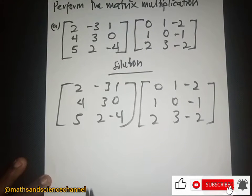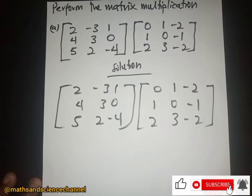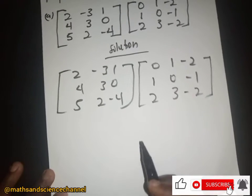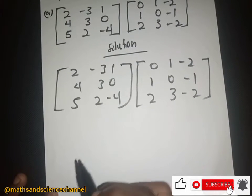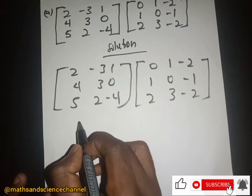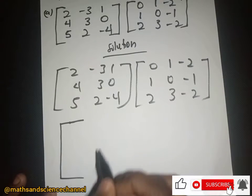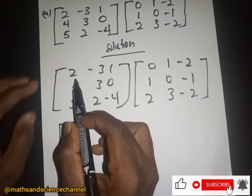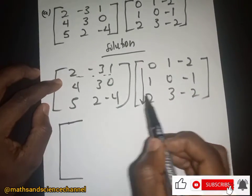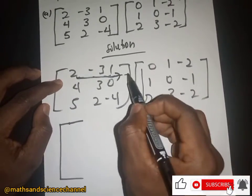What we are going to do is take the row and then multiply it by the column — the row multiplied by the column, the row multiplied by the column. So in each case we go: the row multiplied by the column.